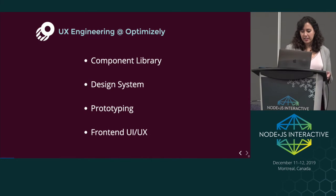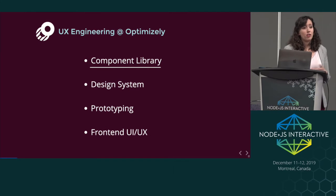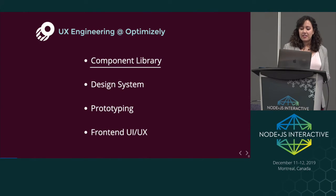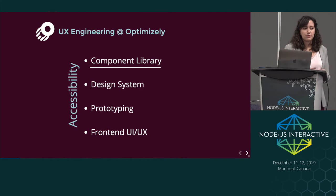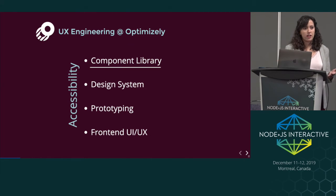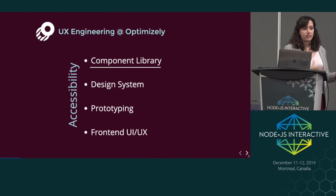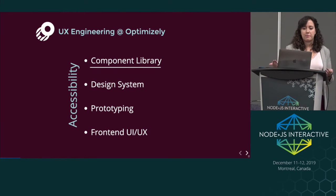Throughout all this work, the underlying part is really the component library — I use it day-to-day, and so do a lot of our engineers. The other key part is accessibility. Together with the components and accessibility work, I try to integrate this even into prototypes, because a lot of times prototyping code gets copied and pasted into production code. So I ensure even our prototypes are accessible, so engineers start thinking about accessibility requirements early on.